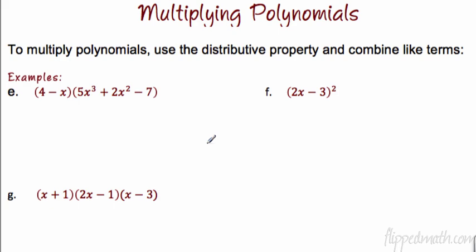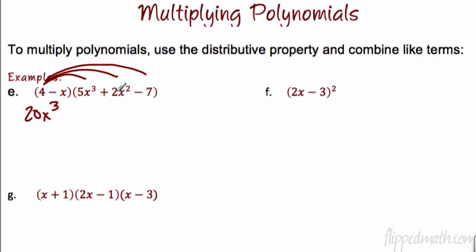Multiplying polynomials — we call this double distribute, and you've done a lot of this already when checking your factoring. We're going to start with example E. Your answer should be written in standard form. I'm going to distribute that 4 all the way across — there are three different terms that the 4 needs to be multiplied on. So we have 4 times 5x to the third, that's 20x to the third. Then 4 times 2x squared, that's a positive 8x squared. And then 4 times negative 7 is minus 28. We're then going to distribute that negative x — it's a negative x because there's a minus in front, so that goes to all three terms as well. We should have six terms when we're all done.